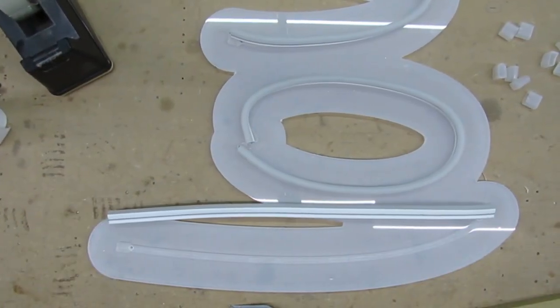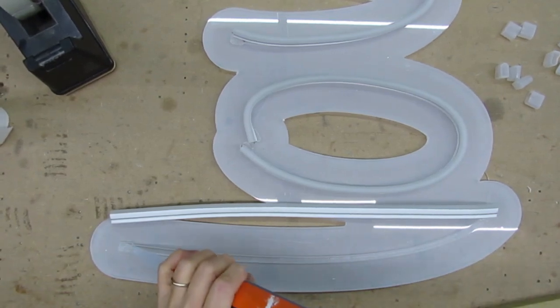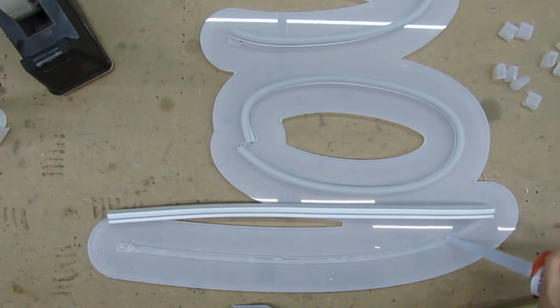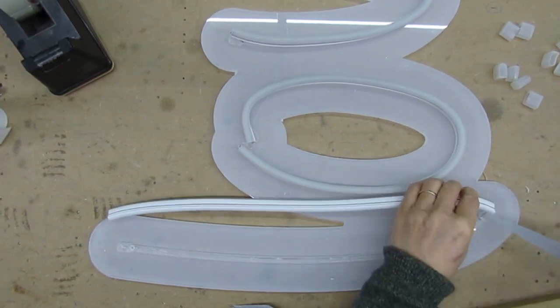Once you've added all your connection wires, you can start to install the neon flex into the channels. Add some silicone into the channel to secure the neon. You can avoid this step for indoor signs with small letters.